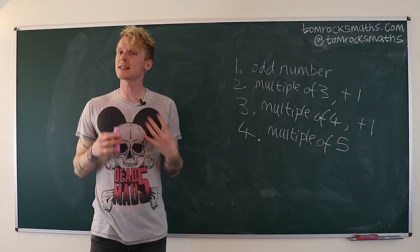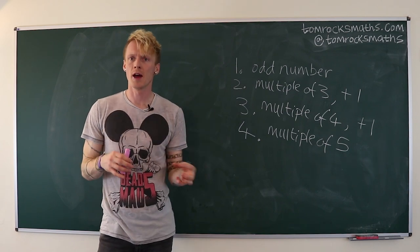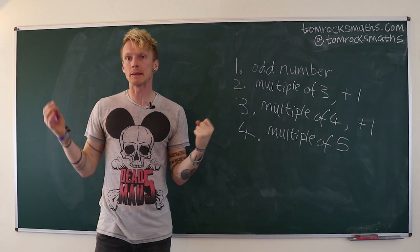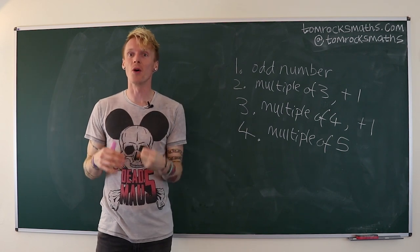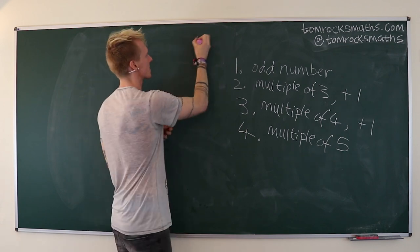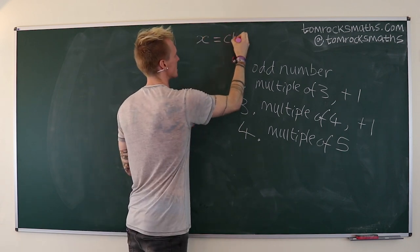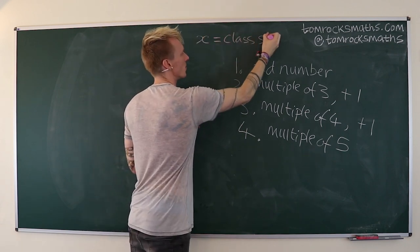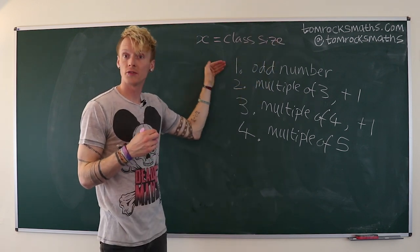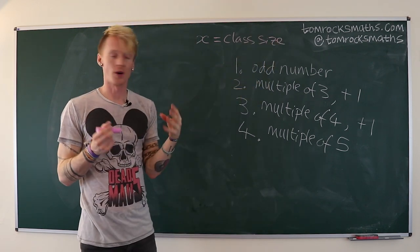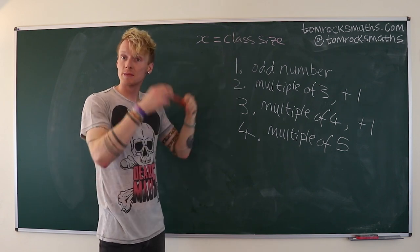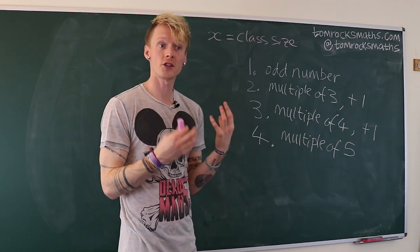Our approach is going to be very similar to what we've just done, but now we're going to think of things using more equations and using more algebra. So to start with, let's call x the unknown class size. Now x must satisfy rules one to four. So our starting point is going to be to write these rules in terms of equations.